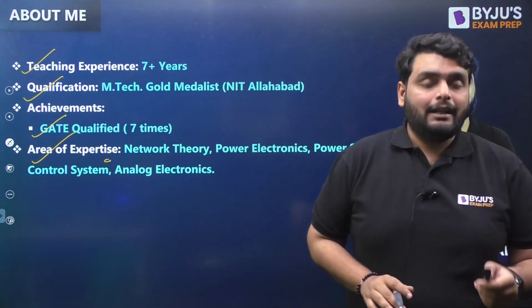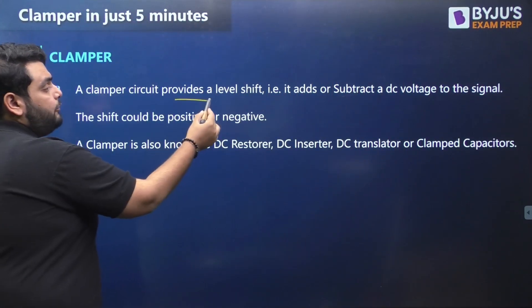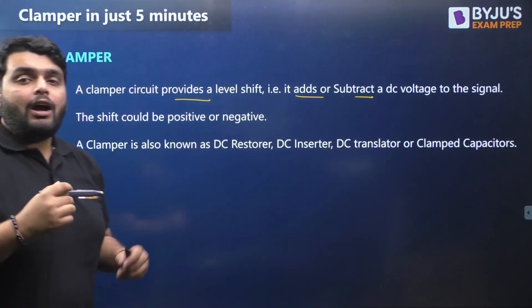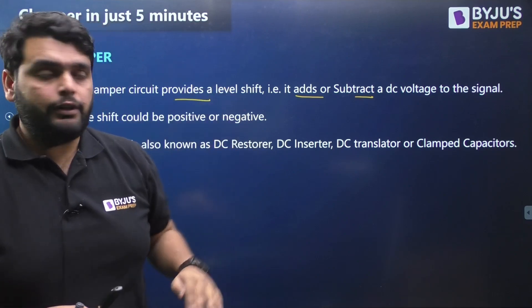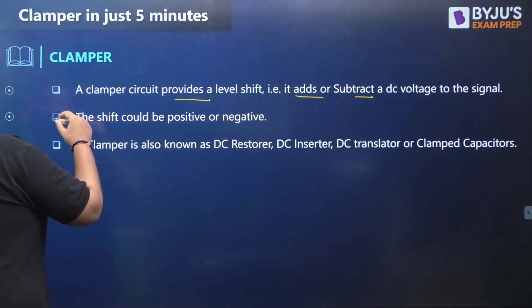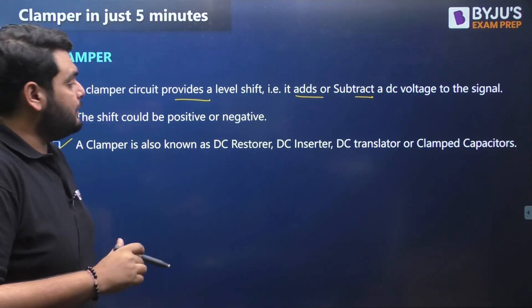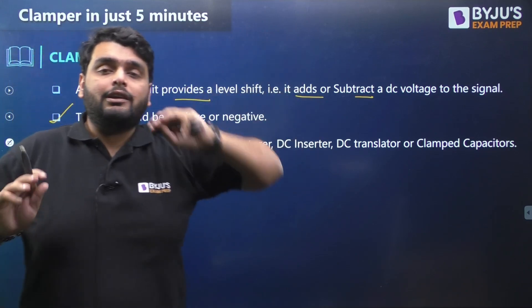What do you mean by a clamper circuit? A clamper circuit is actually a level shifter — it adds or subtracts a DC voltage to a signal. Adding or subtracting a DC voltage means you are either shifting the signal upward or downward. A clamper is also known as a DC restorer, DC inserter, DC translator, or clamped capacitor.